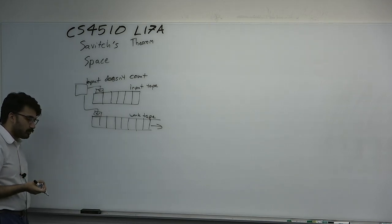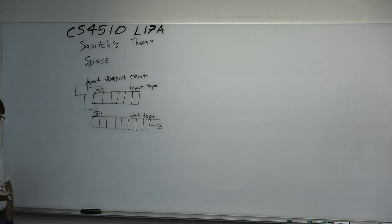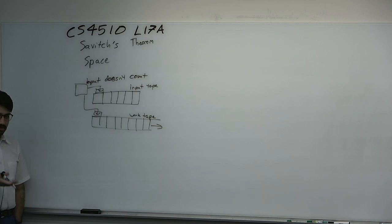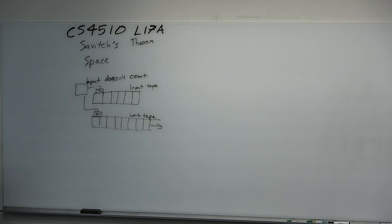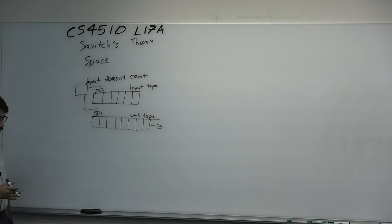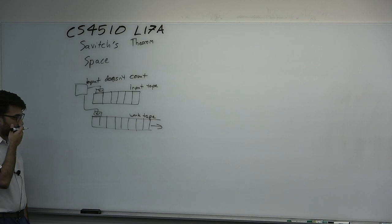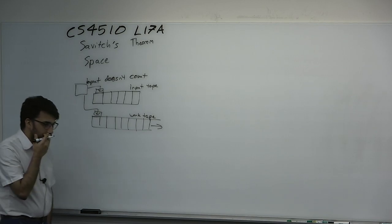Space is really essential — an extremely essential part of computation, even though it's not discussed as much. What is really the difference between a weak DFA and the ultimate Turing machine? You just gave it a memory access, just a bit of memory control. So space is very weird, very different for these reasons.